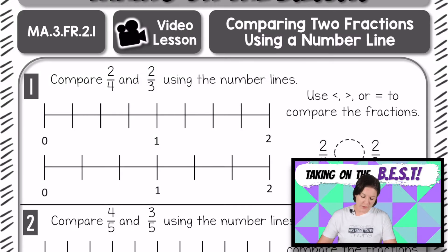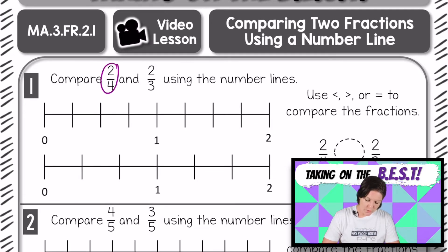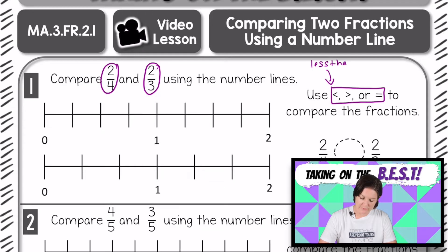Let's start it off with number one. It says to compare 2/4 and 2/3 using the number line. So comparing means that we're going to be using these symbols over here. This symbol means less than. This symbol right here means greater than. I'm actually going to fix less than because it's not one word, it's two words. Less than, greater than, and of course, you are very familiar with the equal sign. Equal to, okay? Greater than, less than, greater than, or equal to.